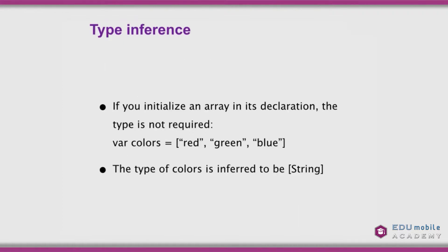The type of an array is inferred by the types of its elements. So if you initialize an array in its declaration, the explicit type annotation is not required. For example, var colors could just as easily be initialized to ["red", "green", "blue"] without specifying the type. However, you can't mix types — you can't have red, green, and the integer 19, because all elements in an array must be the same type.